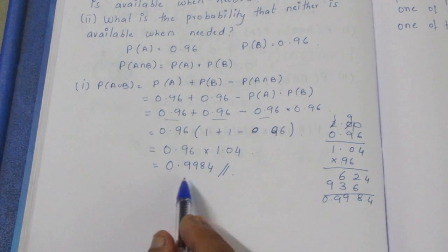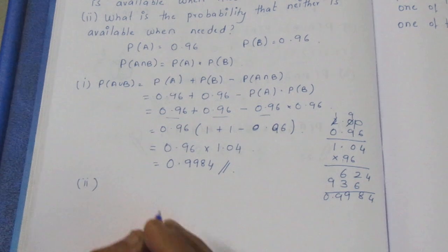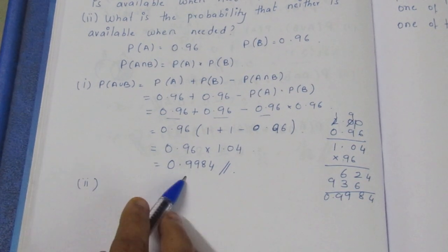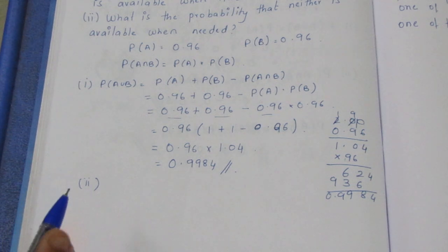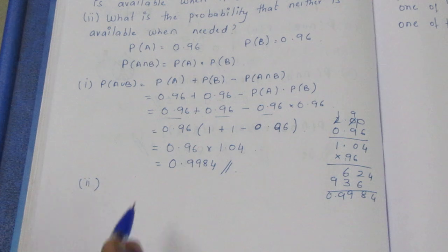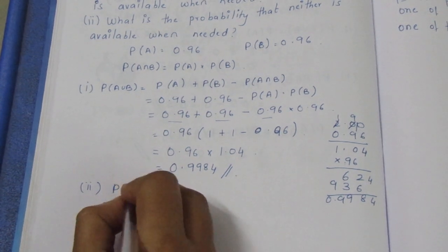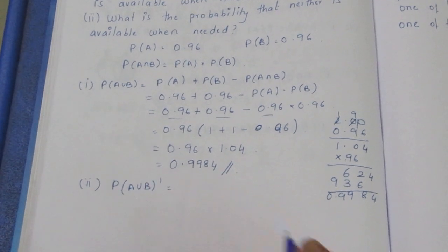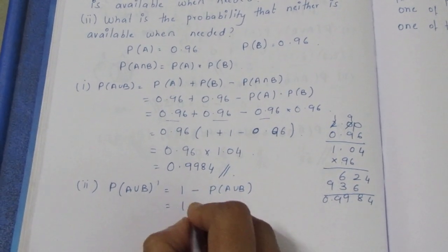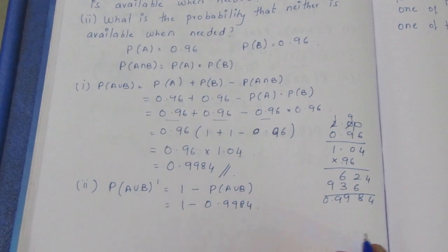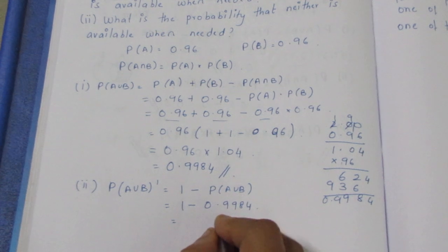The probability that a fire engine is available is 0.9984. Now for the second part: what is the probability that neither fire engine is available? That is 1 − P(A ∪ B) = 1 − 0.9984 = 0.0016.